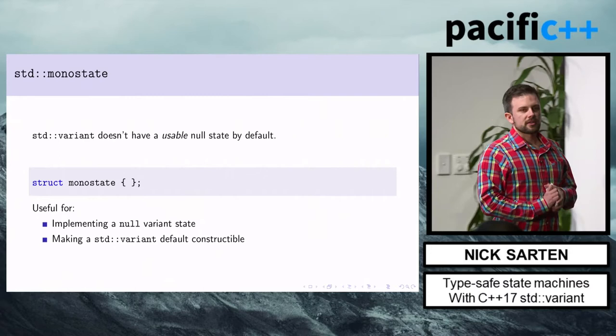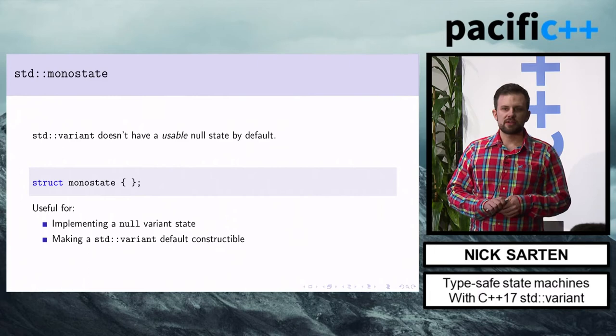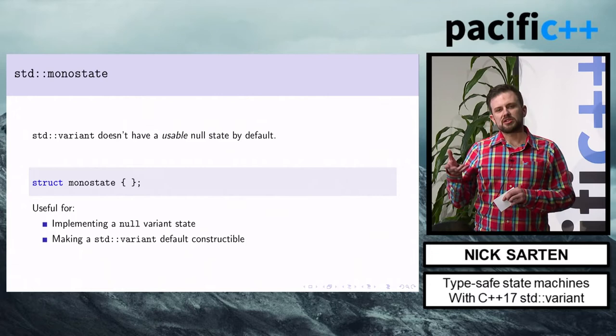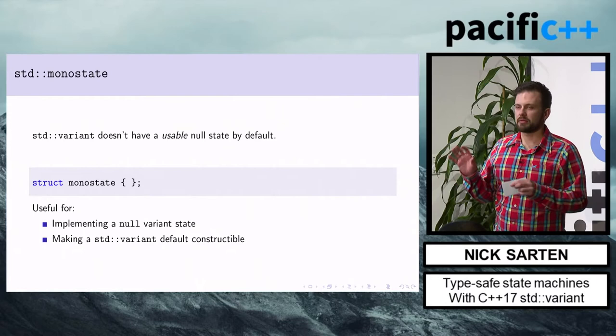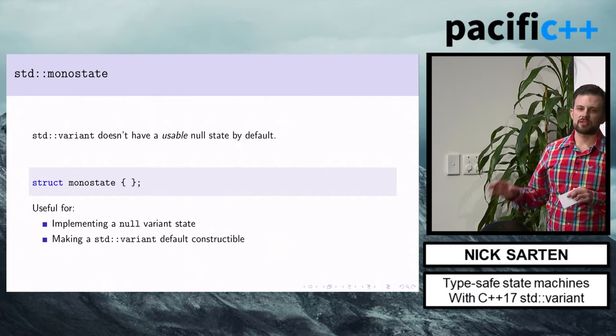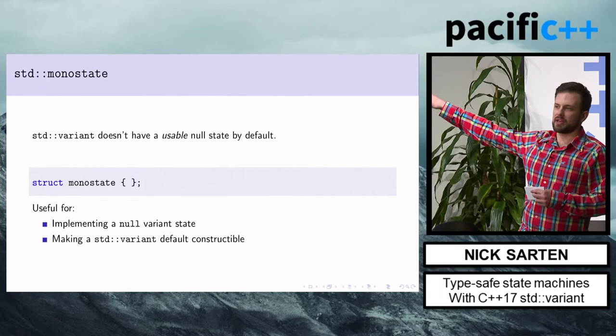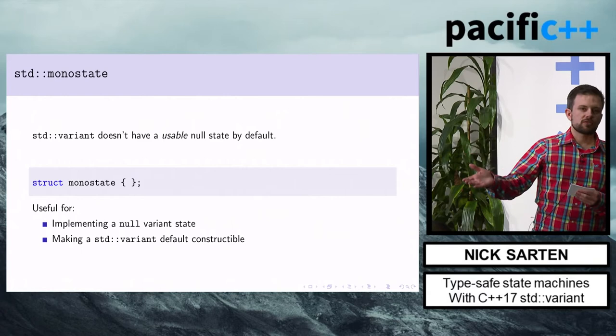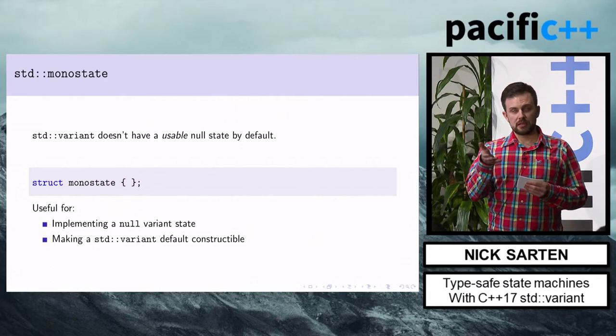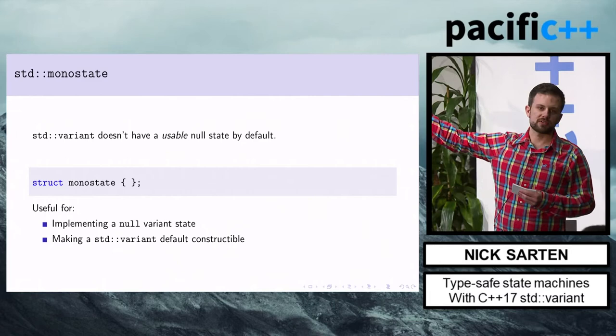std::monostate: std::variant doesn't have a null state by default — it default-constructs to the first type in the type list. std::monostate is one way to get around that. If you need an explicit null/empty state, put std::monostate as one of the types in your list. The other reason to use it is to make a variant default-constructible when the first type in your list is not default-constructible — put std::monostate at the front.